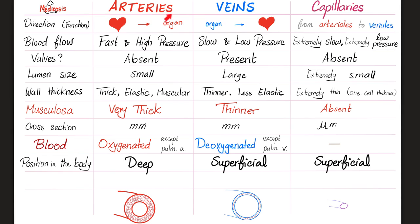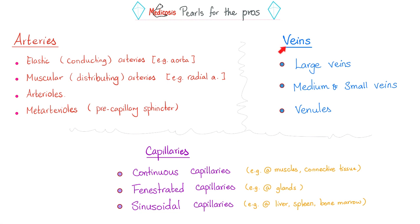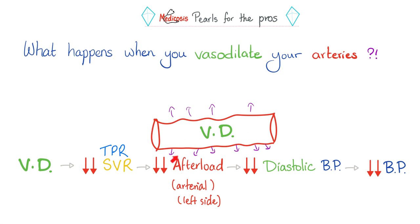Here is a lovely comparison between arteries, veins, and capillaries, including their types. Fluids and hemodynamics is not just about bypassing — it's not that insignificant. For example, if you vasodilate, it decreases the resistance inside the vessel, which decreases the afterload, which decreases diastolic pressure, which can lower blood pressure. The opposite can raise blood pressure — assuming, of course, that we're talking about arterioles.